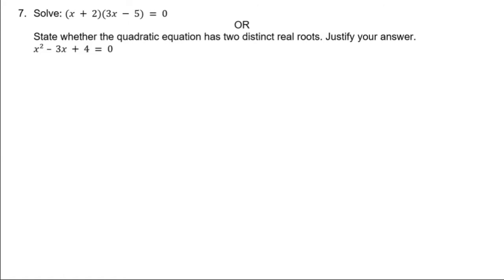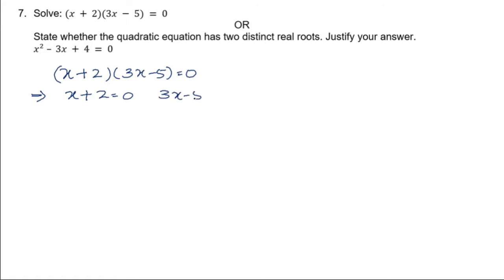Question number 7 has an internal choice. These are questions related to quadratic equations. The first question is to solve for x. They have given: (x + 2)(3x − 5) = 0. In such cases, if the product is equal to 0, either x + 2 = 0 or 3x − 5 = 0. Therefore the value of x is negative 2, or x equals positive 5 by 3. These are the values of x, i.e., the roots of the given equation.